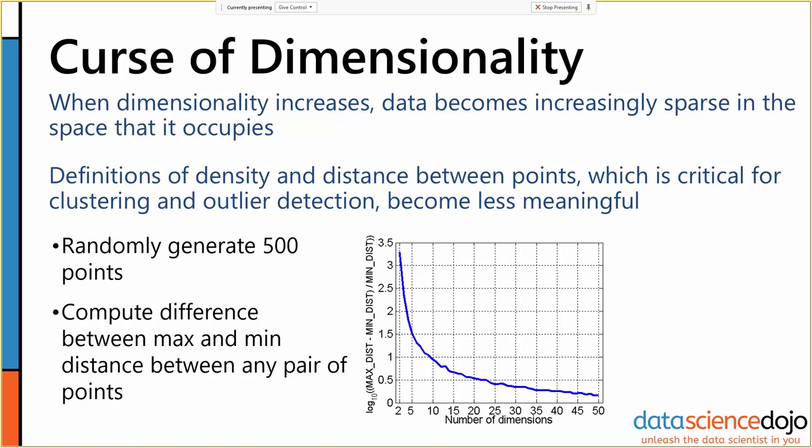We can see that at two dimensions, with 500 randomly generated points, the maximum distance is about 3 and a quarter times larger than the minimum distance. Actually, this is 10 to the 3 and a quarter times larger, because there's a log base 10 here.